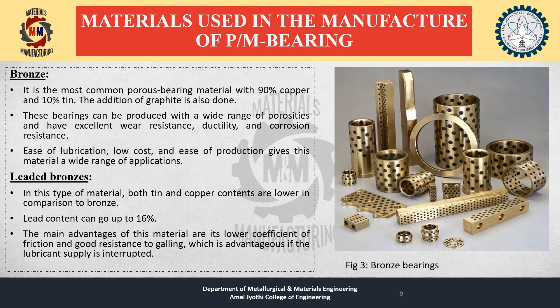Materials used in the manufacture of powder metallurgy bearings — Bronze: It is the most common porous bearing material with 90% copper and 10% tin; addition of graphite is also done. These bearings can be produced with a wide range of porosity and have excellent wear resistance, ductility, and corrosion resistance. Ease of lubrication, low cost, and ease of production give this material a wide range of application. Figure 3 shows the image of self-lubricating bronze bearings.